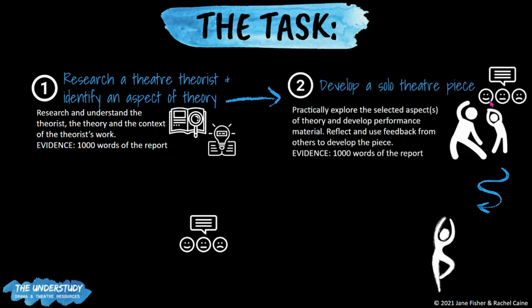The second part, Criterion B, is how you develop a solo theatre piece. In your rehearsals you will be practically exploring ideas, brainstorming ideas, and you will select one aspect — one convention of this particular theorist's theory — and use that to develop performance material. You will experiment with different ideas in class, and in this section you need to reflect and use feedback from your peers and teacher, and reflect on this in Part B of your solo theatre report. Part B will end up being around about a thousand words.